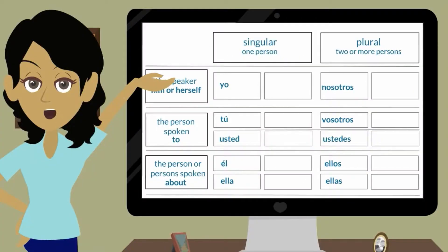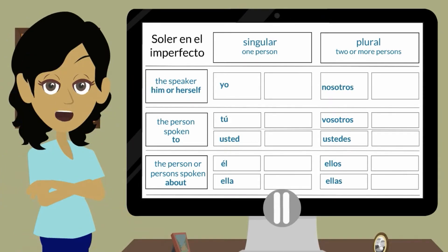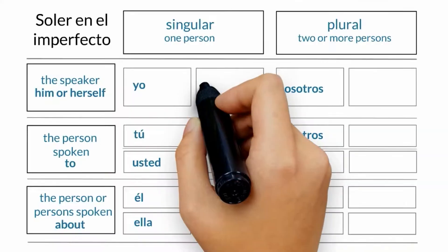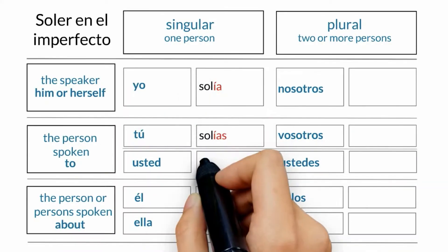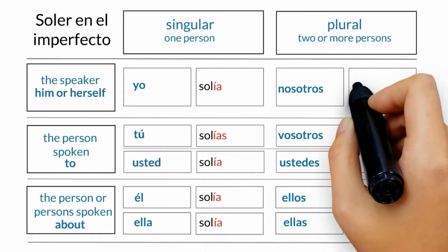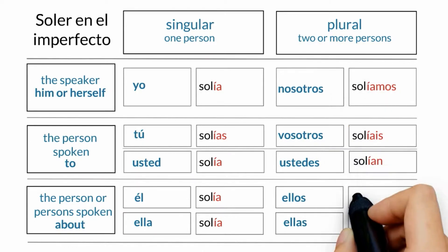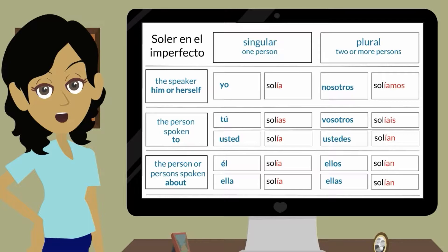Verbs ending in ER or IR will have the following endings in the imperfect. You may pause the video at any time. Those endings are the same for ER and IR verbs.